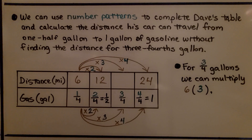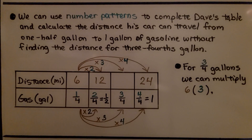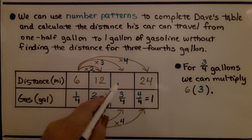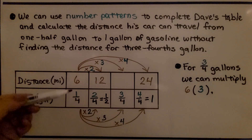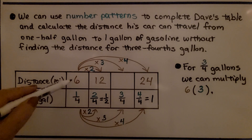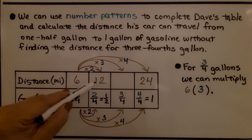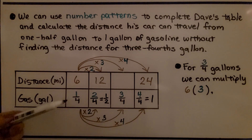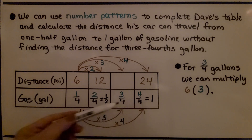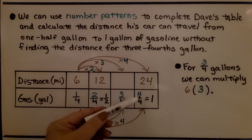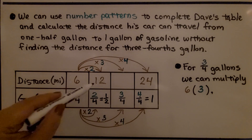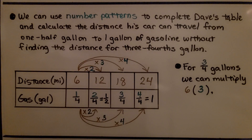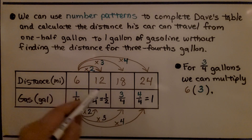We can use number patterns to complete Dave's table and calculate distance from one-half gallon to one gallon of gasoline without finding the distance for three-fourths gallon. If six miles is one-fourth gallon, we're doing six times one. Writing the fractions unsimplified — one-fourth, two-fourths, three-fourths, four-fourths — we do six times two equals 12, six times three equals 18, six times four equals 24. For three-fourths gallon, we just multiply six times three.